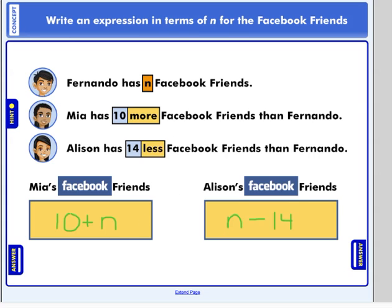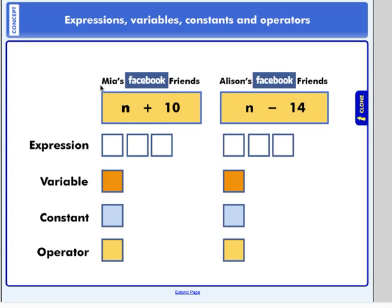This is what we mean when we say to write an expression. Mia's Facebook friends, we said, would be represented with n plus 10. The expression is n plus 10. Now, it does not have an equal sign. It's not a complete equation. It's just an expression that represents some sort of value. The variable is n. Remember letters that we use in place of numbers? Those are called variables. Sometimes we call the normal numbers, the standard numbers, we call those constants. It can't change. 10 is 10. We can't change it to something else. It's 10. It's constant. And the operator tells us which operation to use. That's, in this case, addition.